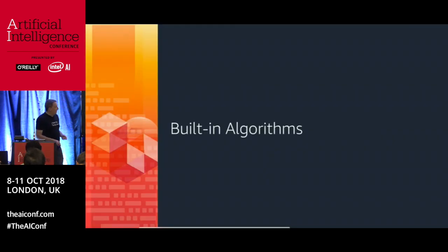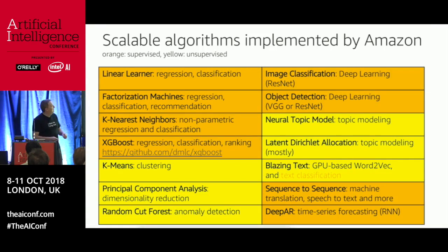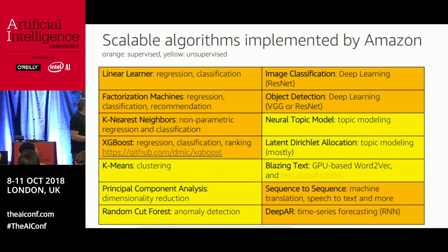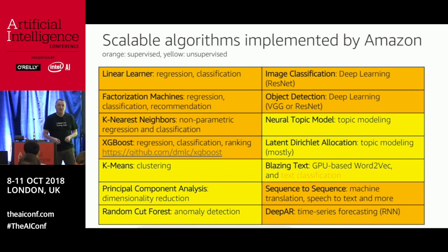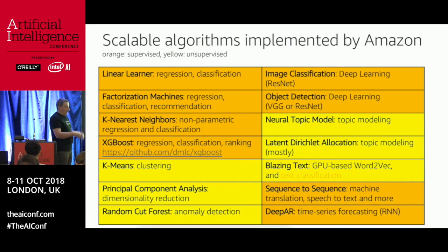One of my favorite parts of the service is the built-in algorithms. There's a color code: orange is supervised, yellow is unsupervised. Today we have a total of 14 built-in algorithms that you can literally take and run immediately.